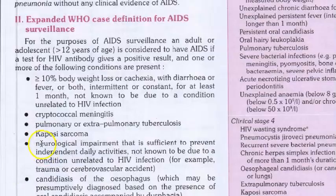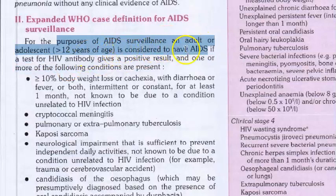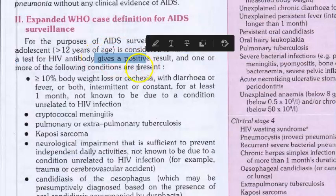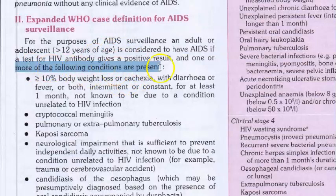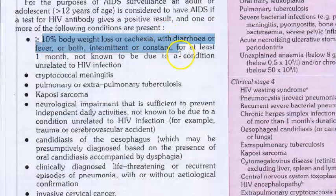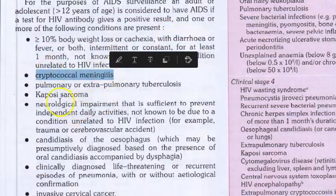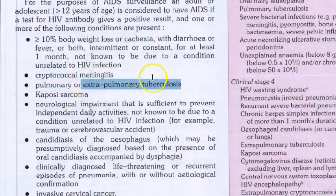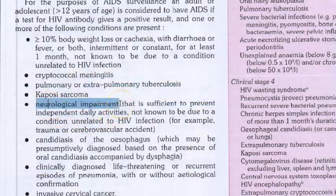Now, the extended case definition for AIDS: for surveillance purposes, an adult or adolescent greater than 12 years is considered to have AIDS if a test for HIV antibody gives a positive result and one or more of the following conditions are present: greater than 10 percent body weight loss, diarrhea, fever, cryptococcal meningitis, Kaposi sarcoma, tuberculosis, or neurological impairment.